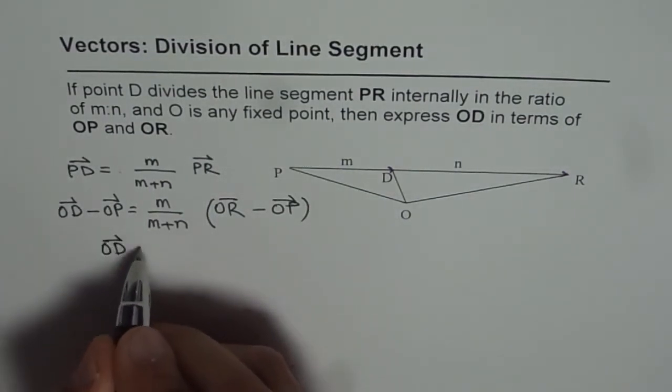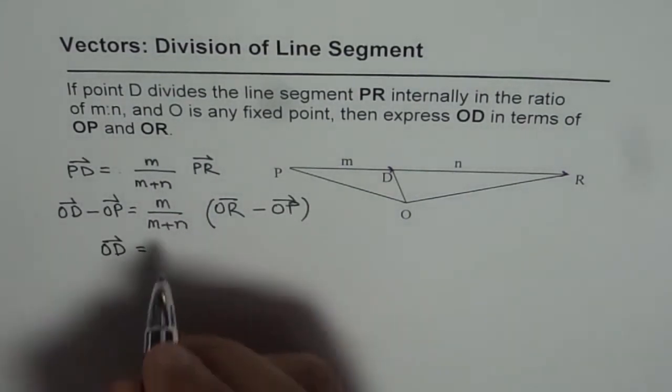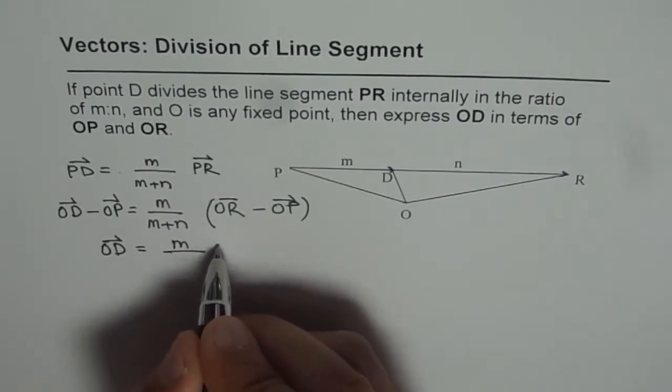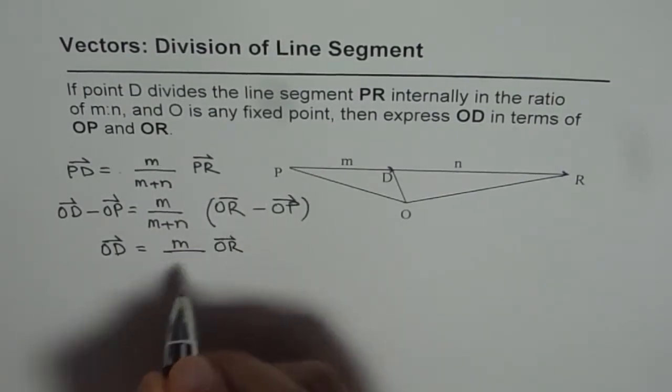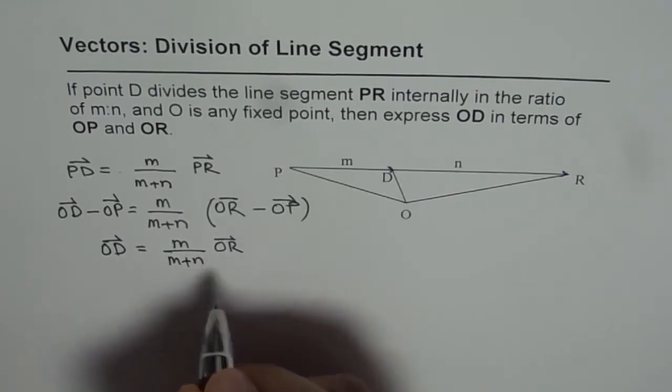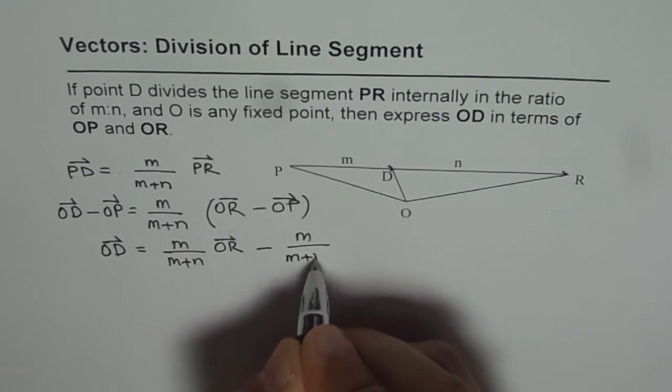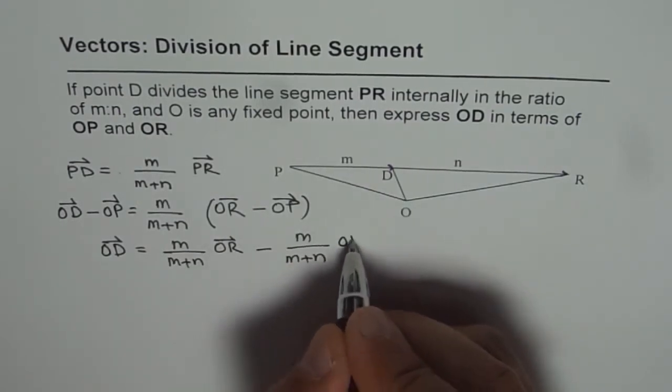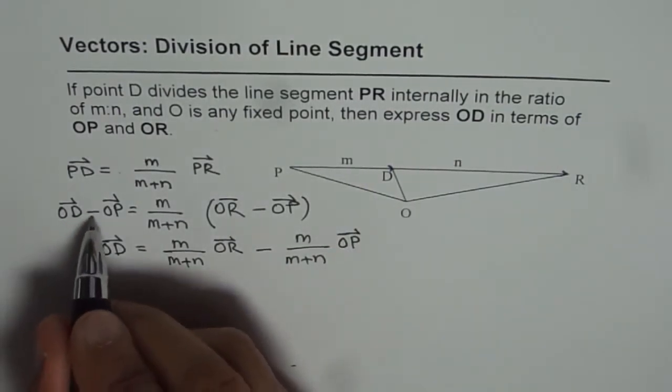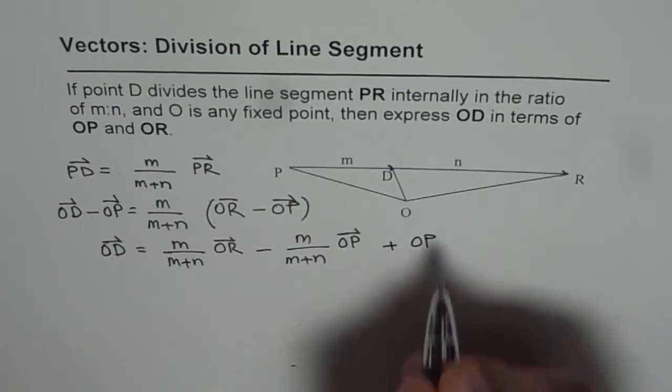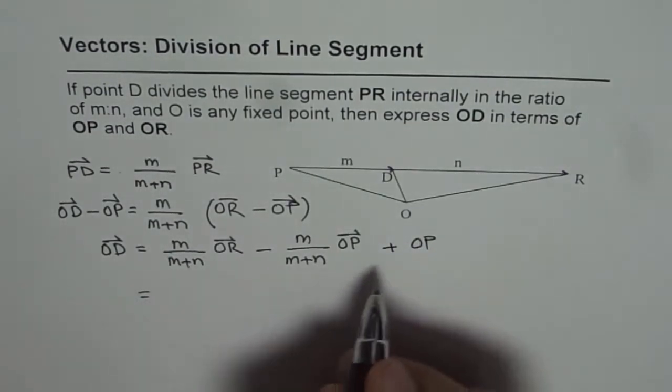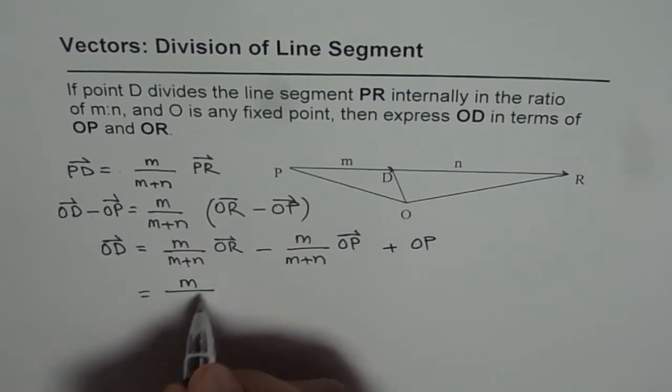OD equals and expand this. We get M times OR, M over M plus N minus M over M plus N times OP plus OP.